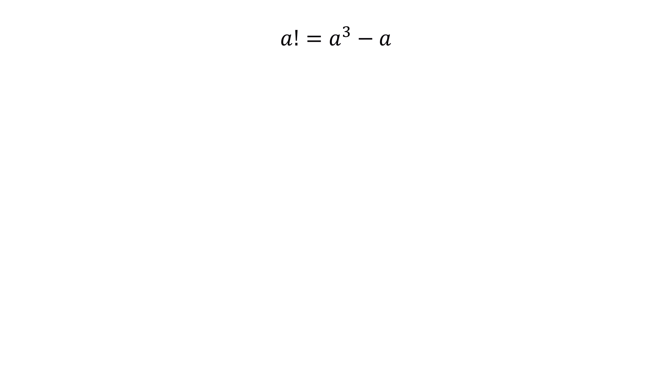We have a factorial equals a cubed minus a. The first thing we'll do is expand the factorial. Factorial means we are multiplying all the natural numbers from the particular number down to 1. So a times (a minus 1) times (a minus 2) all the way to 1 equals a cubed minus a.